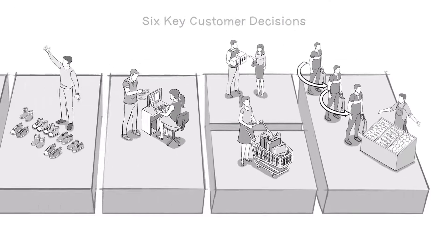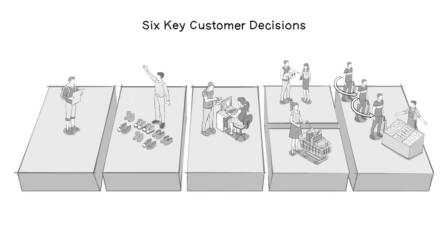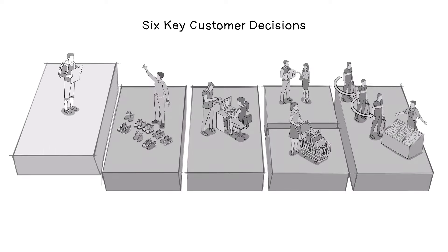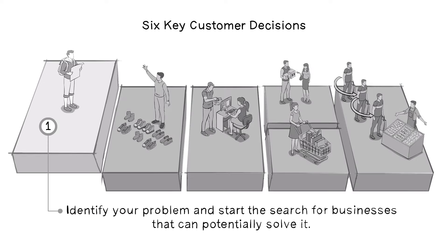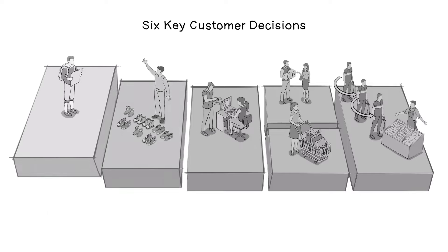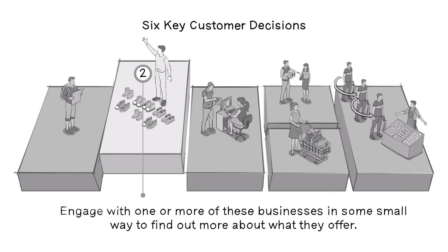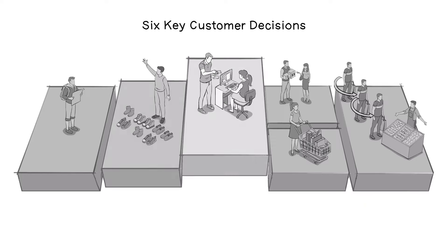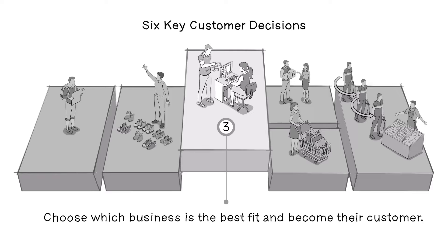These are the six customer decisions every buyer must make every single time they go out to solve a problem they have. One, identify your problem and start the search for businesses that can potentially solve it. Two, engage with one or more of these businesses in some small way to find out more about what they offer. Three, choose which business is the best fit and become their customer.